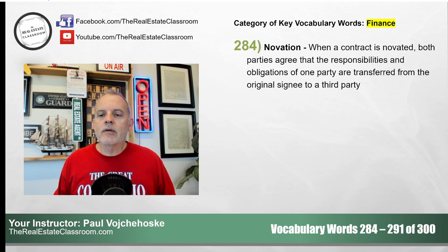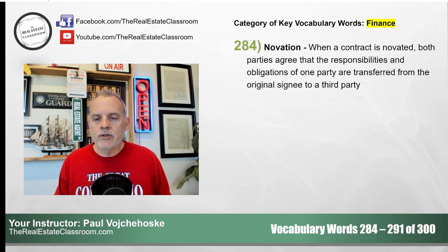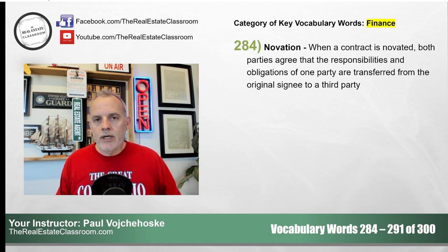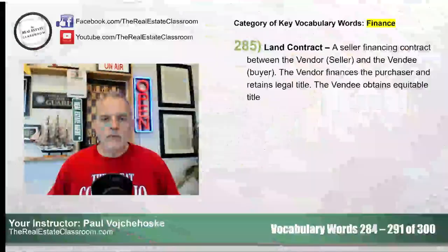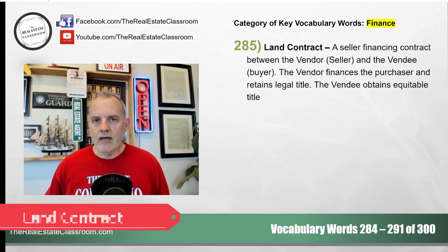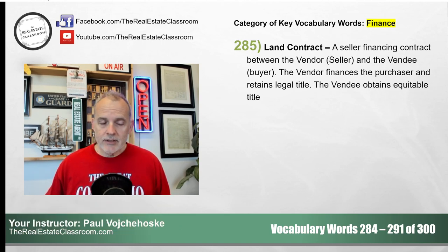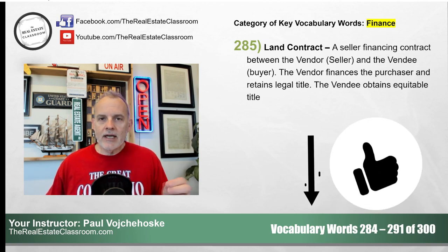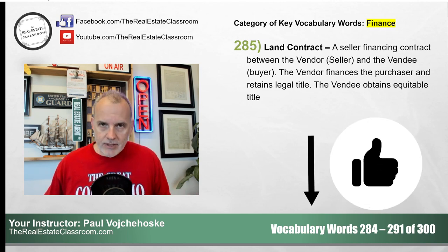And that's the basic example to explain novation. Novation simply means we're transferring all the obligations and duties from one party to a contract to another. Number 285 is a land contract. A land contract is a very common contract in real estate — it's actually a contract and also a financing instrument at the same time.